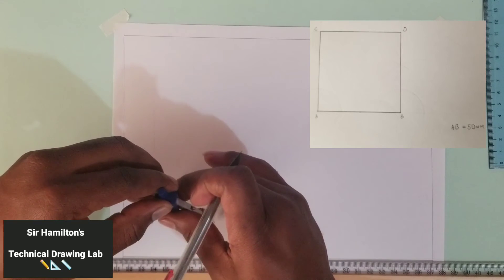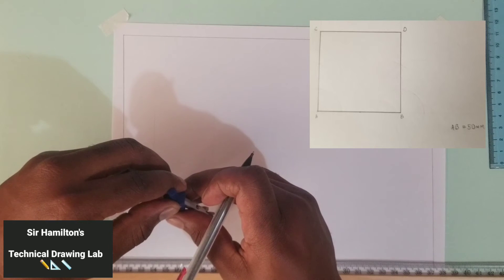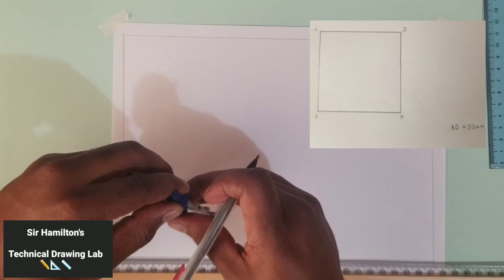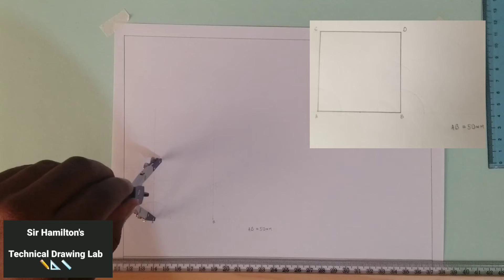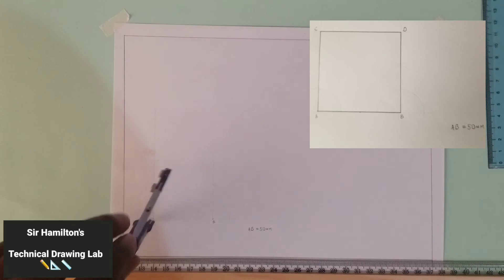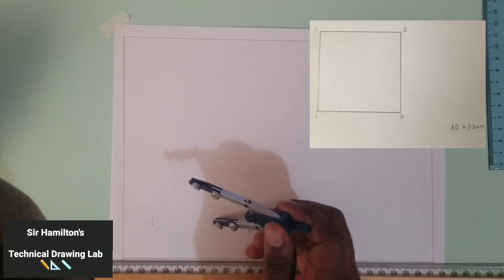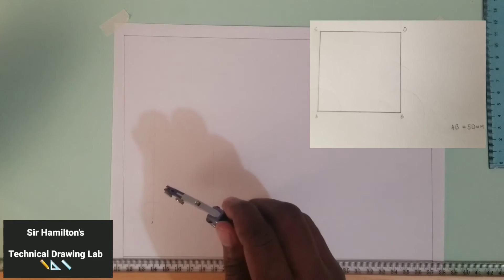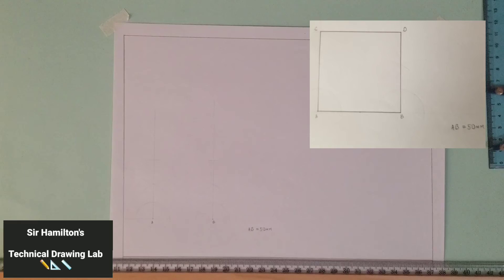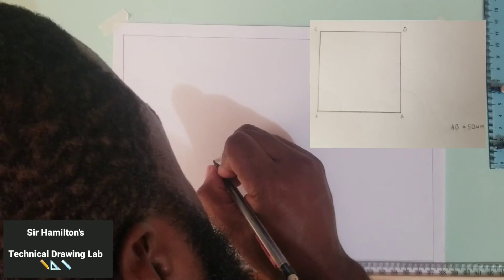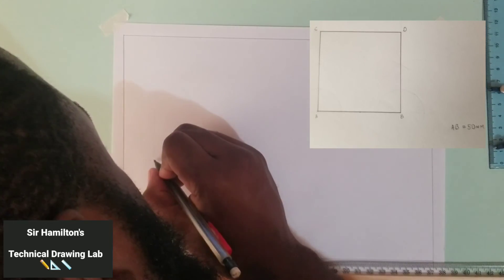So the next step is open our compass to 50 millimeters at AB and scribe an arc at the top of this line that we made from A, and scribe a second arc at the top of this line that we made at B. After doing so, we can just go ahead and brighten that point with our pencils.